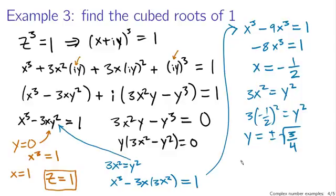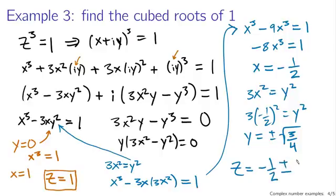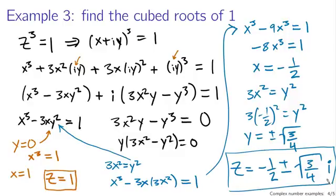That gives us our other two solutions to this cubic. We have a cubic equation, so we'd expect three solutions — especially working with complex numbers. Our three solutions are: z equals one, and z equals minus one half plus or minus the square root of three fourths times i.